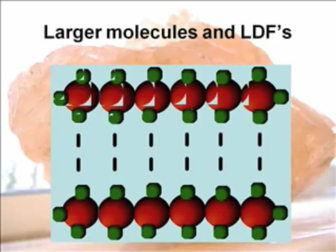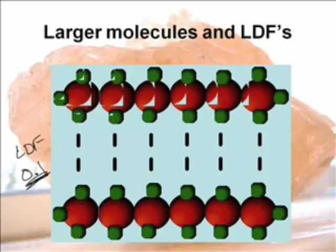Here's a better picture — lots of London forces. Have you ever played with a thread? Easy to break a thread? Yeah, pretty easy. But what if you took 50 threads and twisted them together? Not so much anymore, because it's now almost like a rope. Each strand is very, very weak — each London dispersion force from our original table has a strength of 0.1, but if you get 10 of them together, you get one. If you get 100, you get 10.